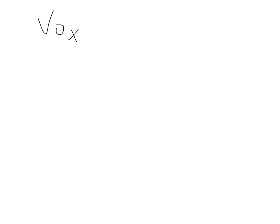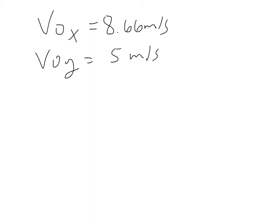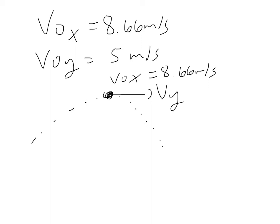Now let's say you want to figure out how long it takes for this object to reach its maximum height after it's been thrown. The initial velocity along x remains constant at 8.66 meters per second. V0y starts at 5 meters per second and is going to change. At the maximum height, just as in one-dimensional freefall problems, the y component of the velocity is zero, and the entire velocity is along x. At maximum height, your v0x is still 8.66, but vy is equal to zero.